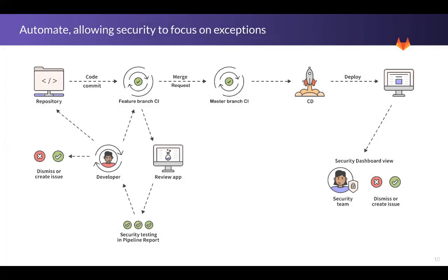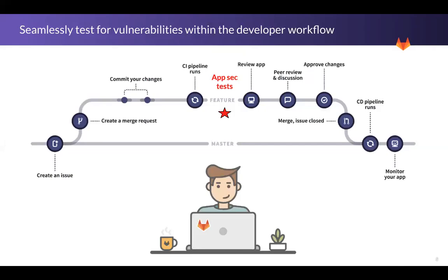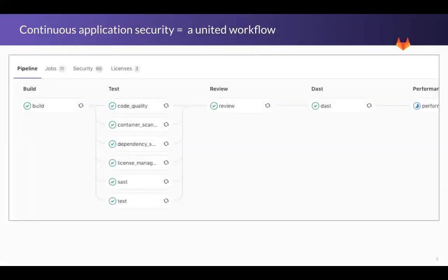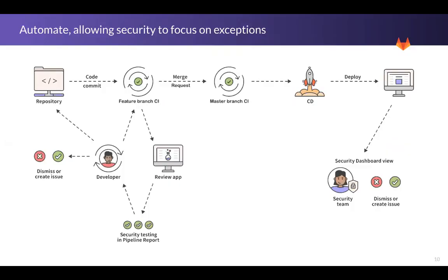If I only had three slides to use, it would be the feature branch testing, all the testing we do in development, and this iterative cycle. As the developer iterates on their code naturally — checking if it functions as intended and if the user is happy with the design — they're also iterating on their security vulnerabilities and findings. As a developer, I have three choices: if I can fix it, I fix the vulnerability — that's the preferred route. Or I can create an issue so it doesn't fall between the cracks, or I can dismiss it.